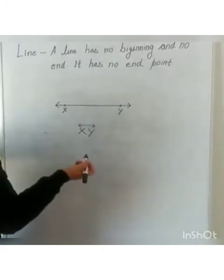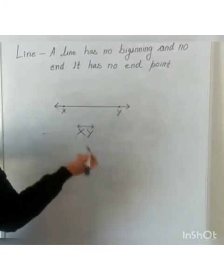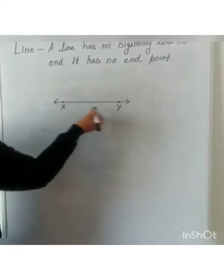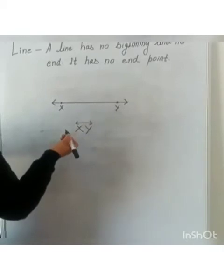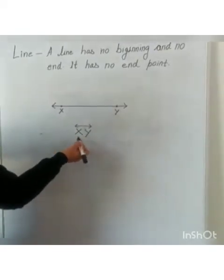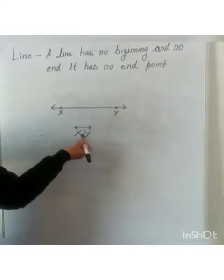And to name a line, any two points on the line are selected. So I have written X and Y by capital letters of English alphabet. So in this way, we will represent the line.